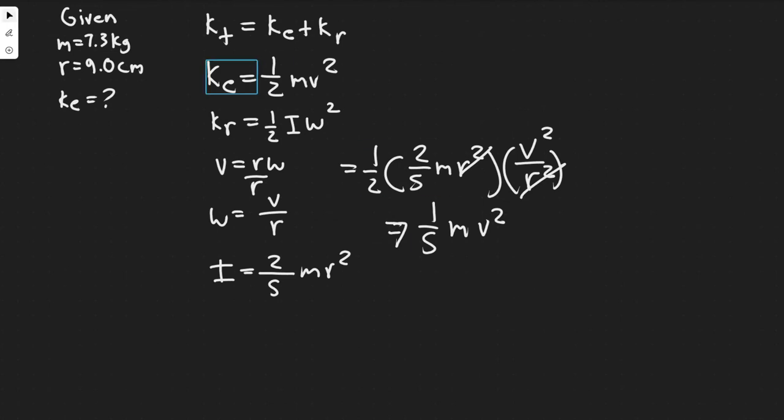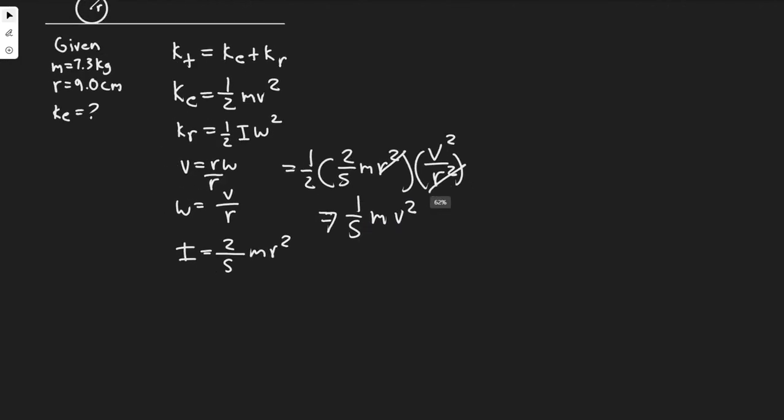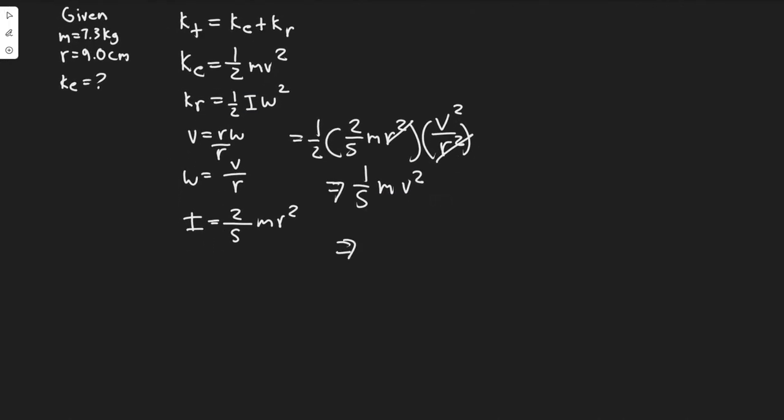It's just a matter of adding them up. So the total kinetic energy is 1 half m v squared plus 1 over 5 m v squared.